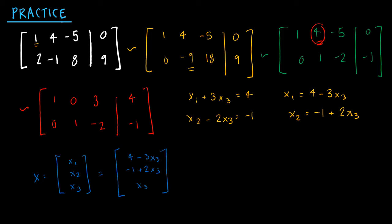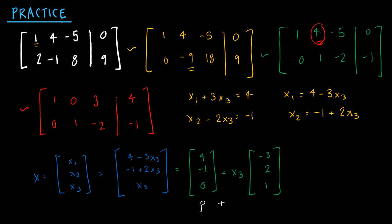Just as I did last time, I can write this as two vectors: P equals 4, negative 1, 0, and then all the x3 terms factored out give the vector negative 3, 2, 1 multiplied by x3. This is now in the proper format — P is my translation, and the second part is T times V, or whichever letter you prefer.